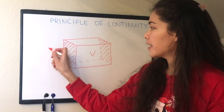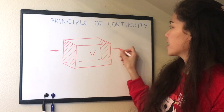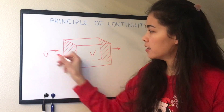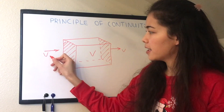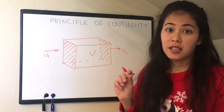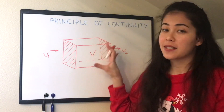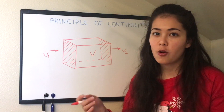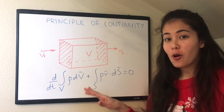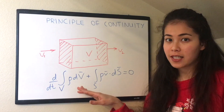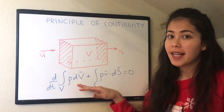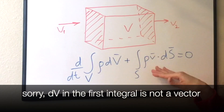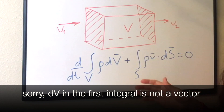Air enters through this side and exits through another side. The speed of air will be V1 here and V2 here, because we don't know what happens inside. Now we can write down the principle of continuity in mathematical terms or in an equation. We wrote down the expression for the principle of continuity in the integral form. I know it looks very complicated, but let's analyze each term one by one and see where it gets us.